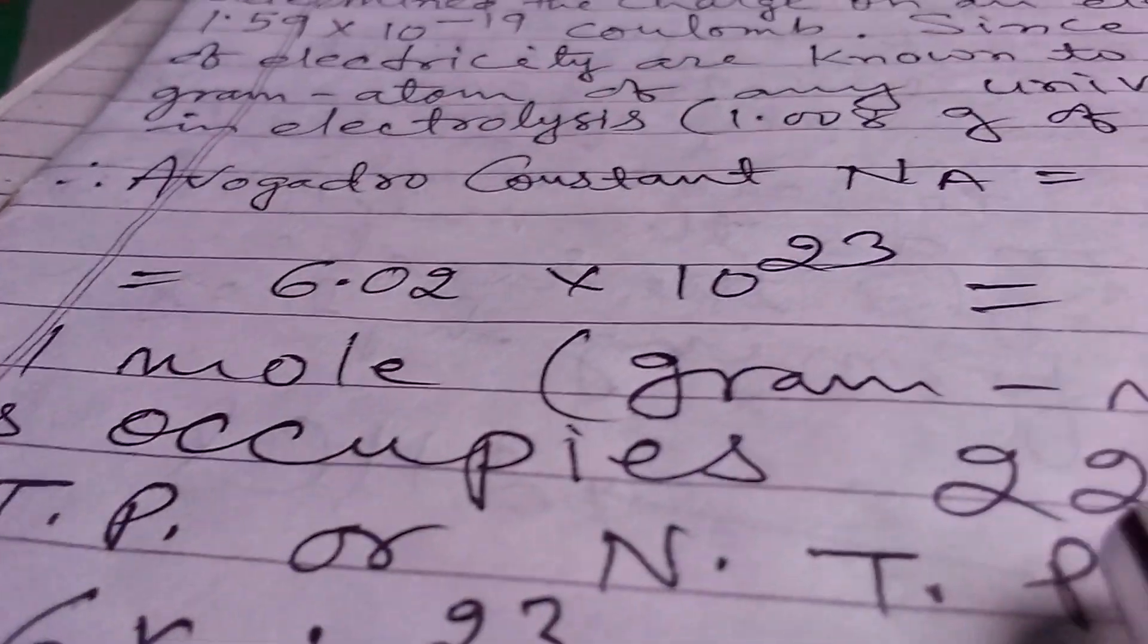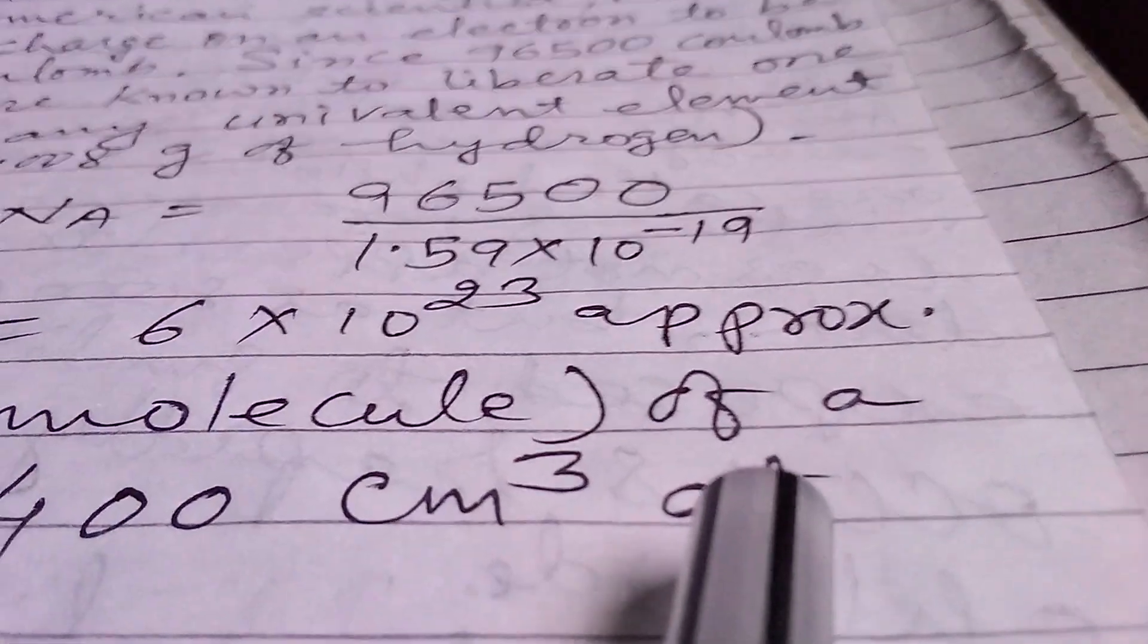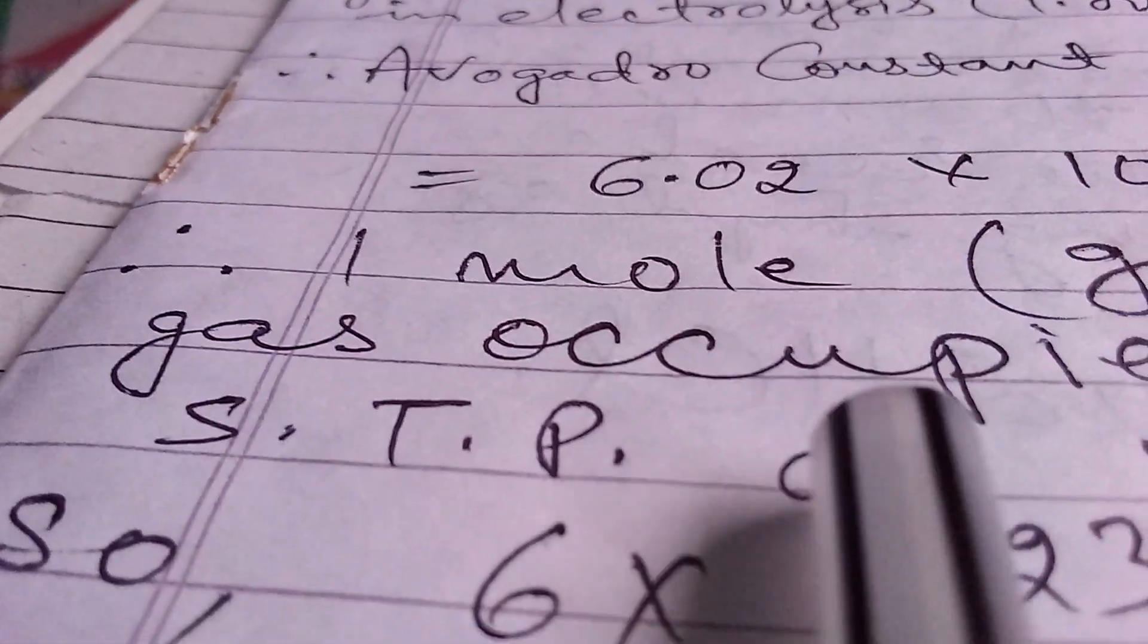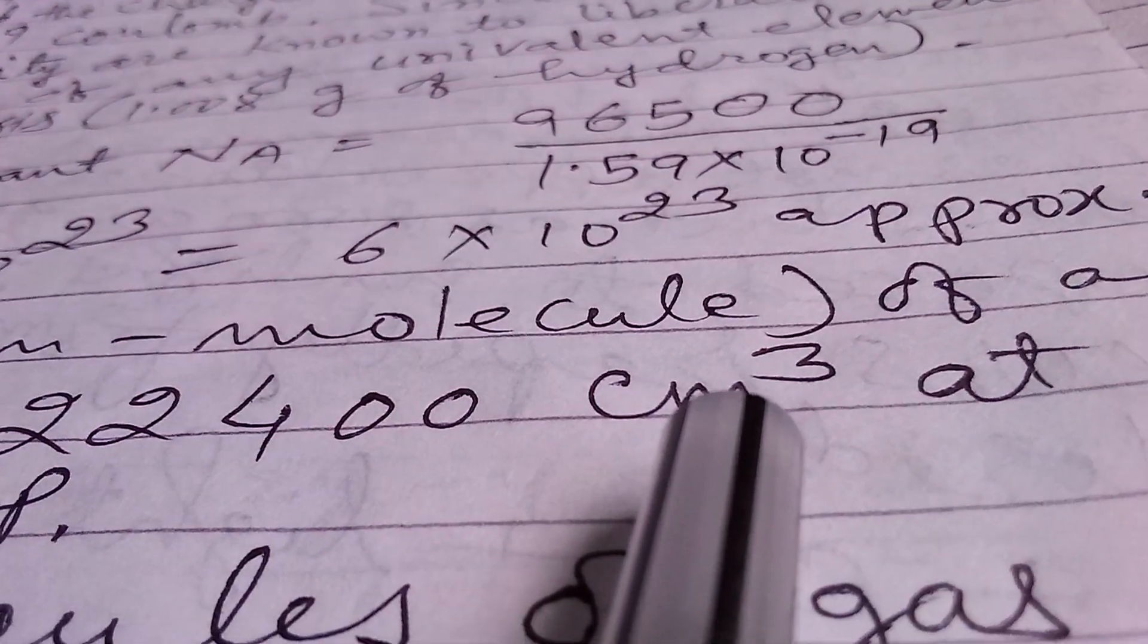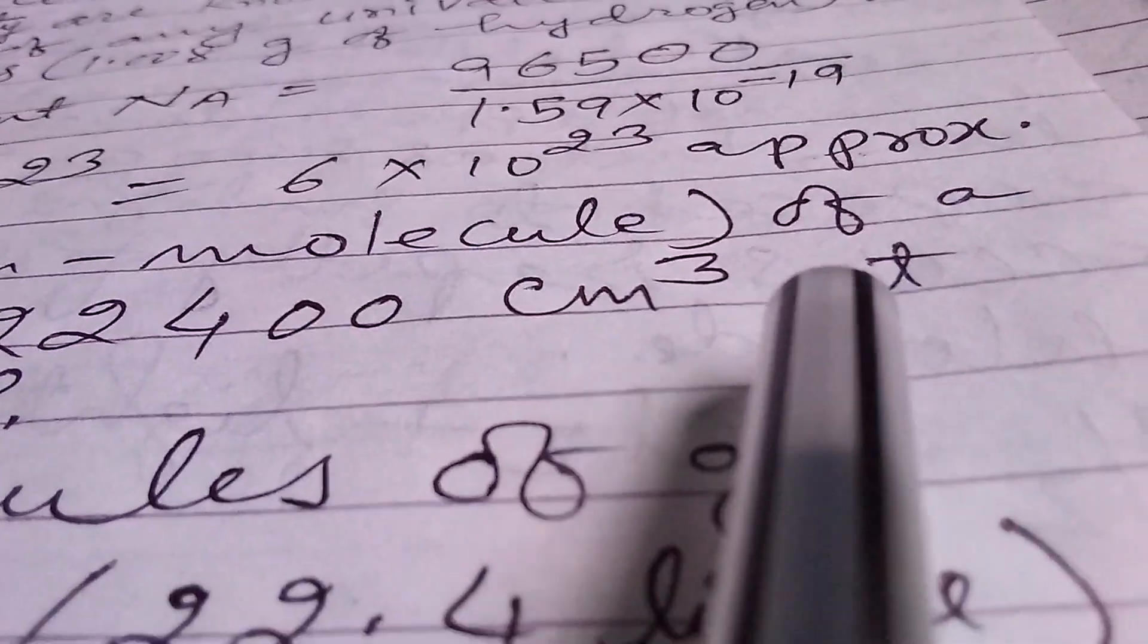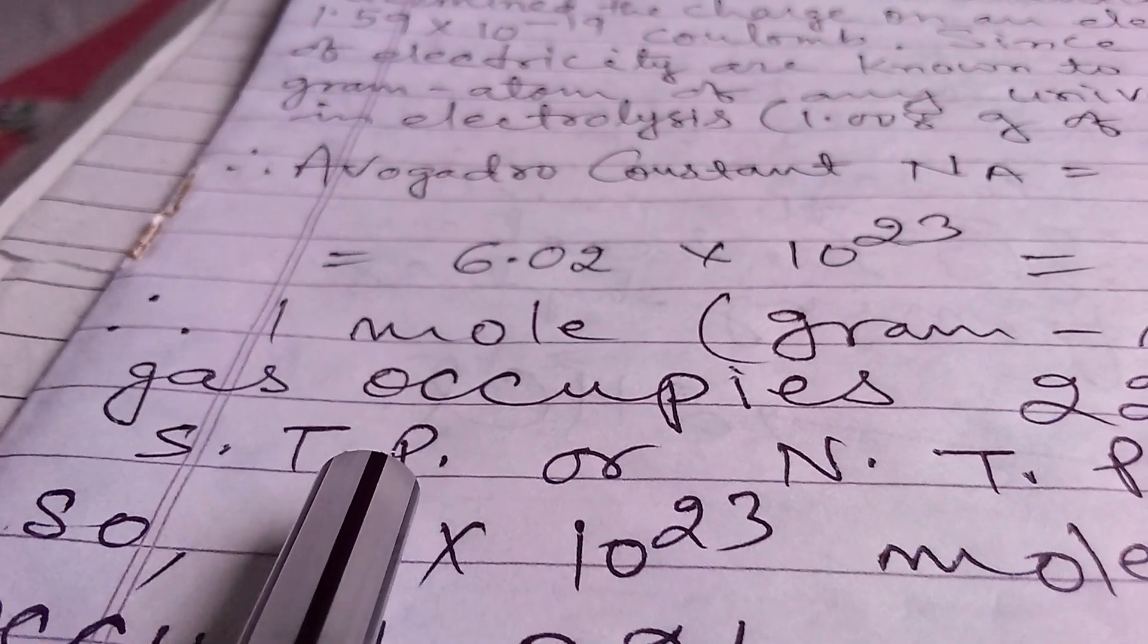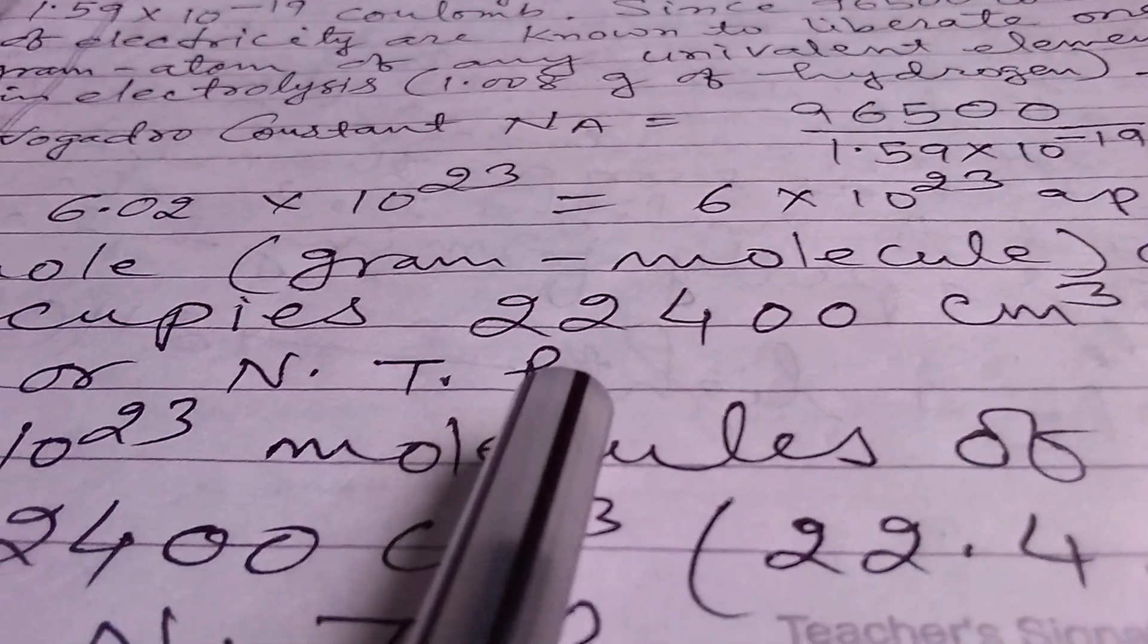Therefore one mole, that is a gram molecule of a gas, occupies 22,400 cubic centimeters at STP, that is standard temperature and pressure, or NTP, that is normal temperature and pressure. Both are the same.